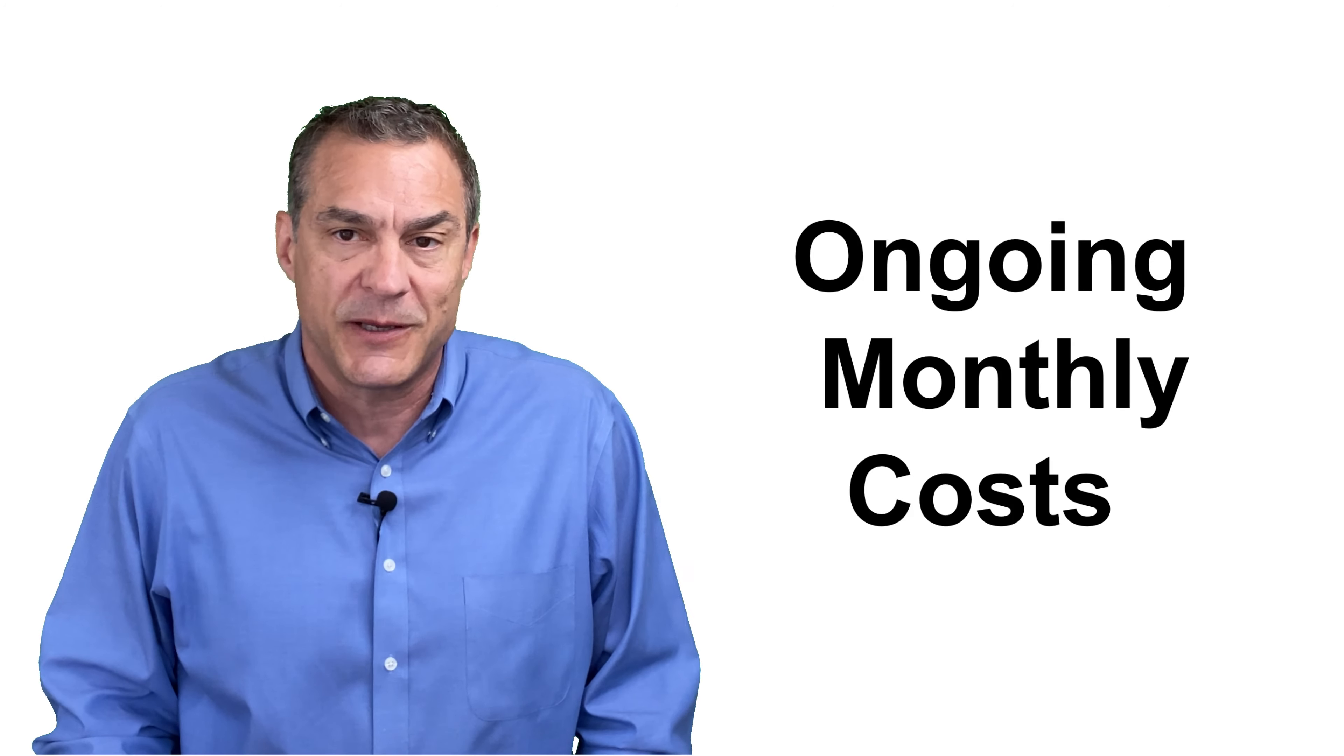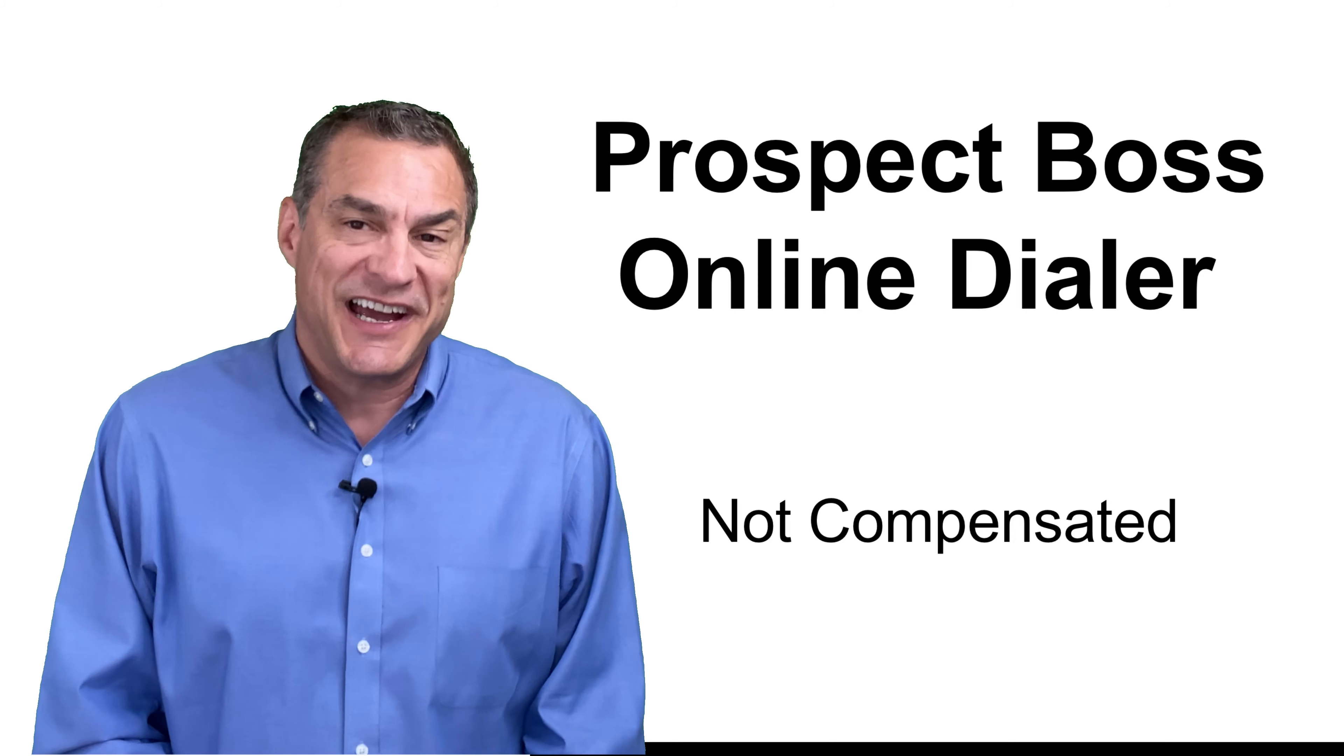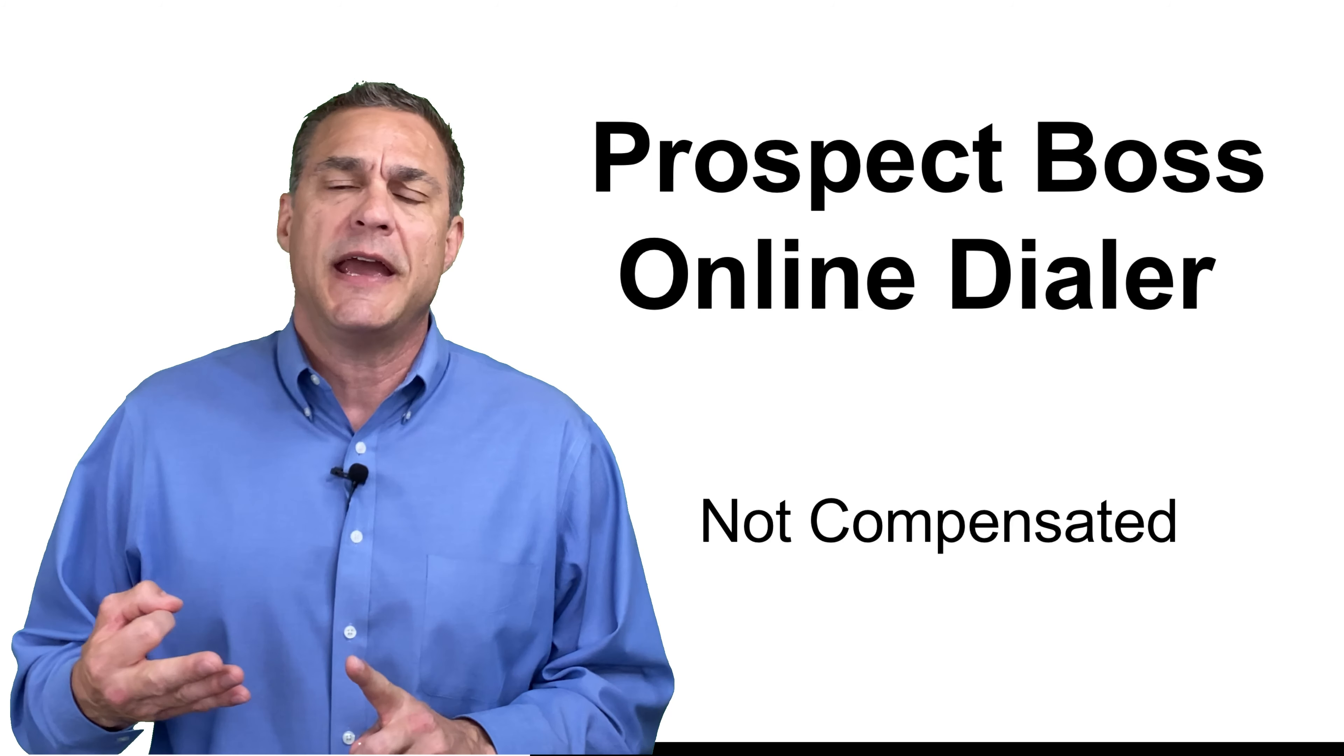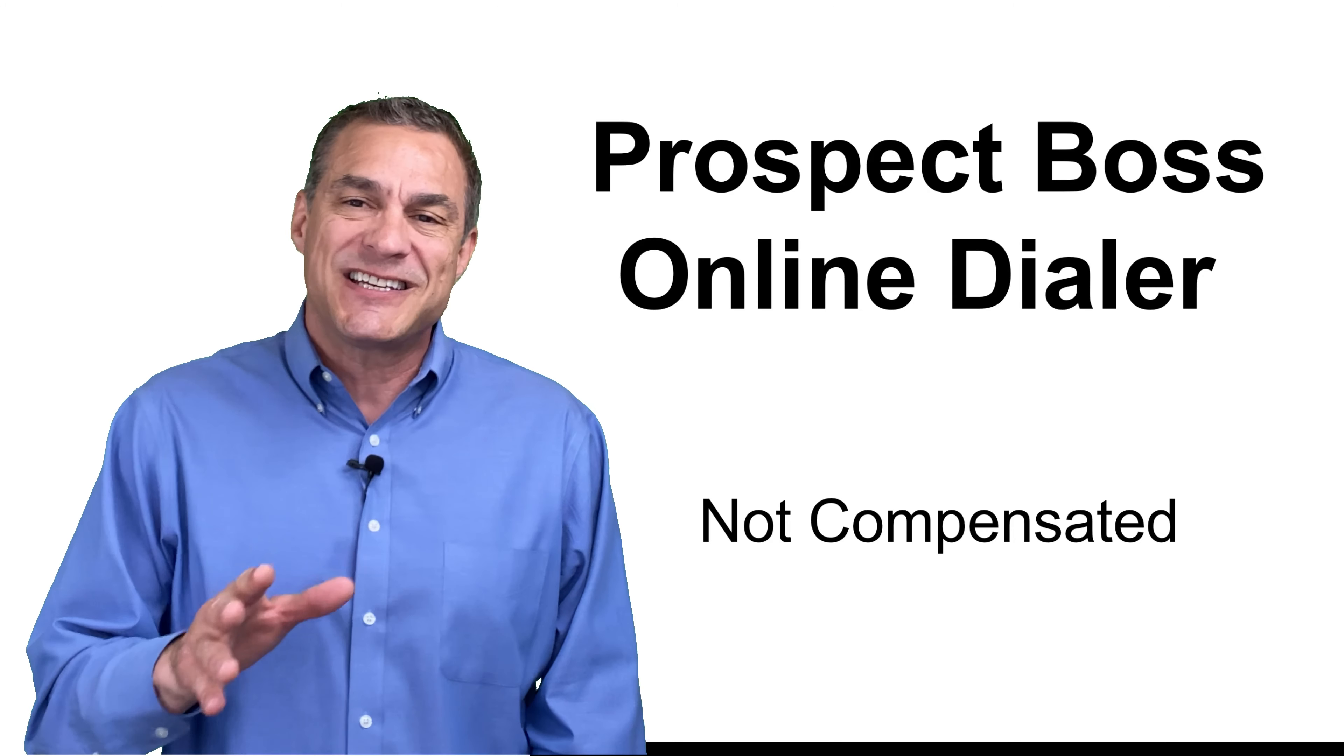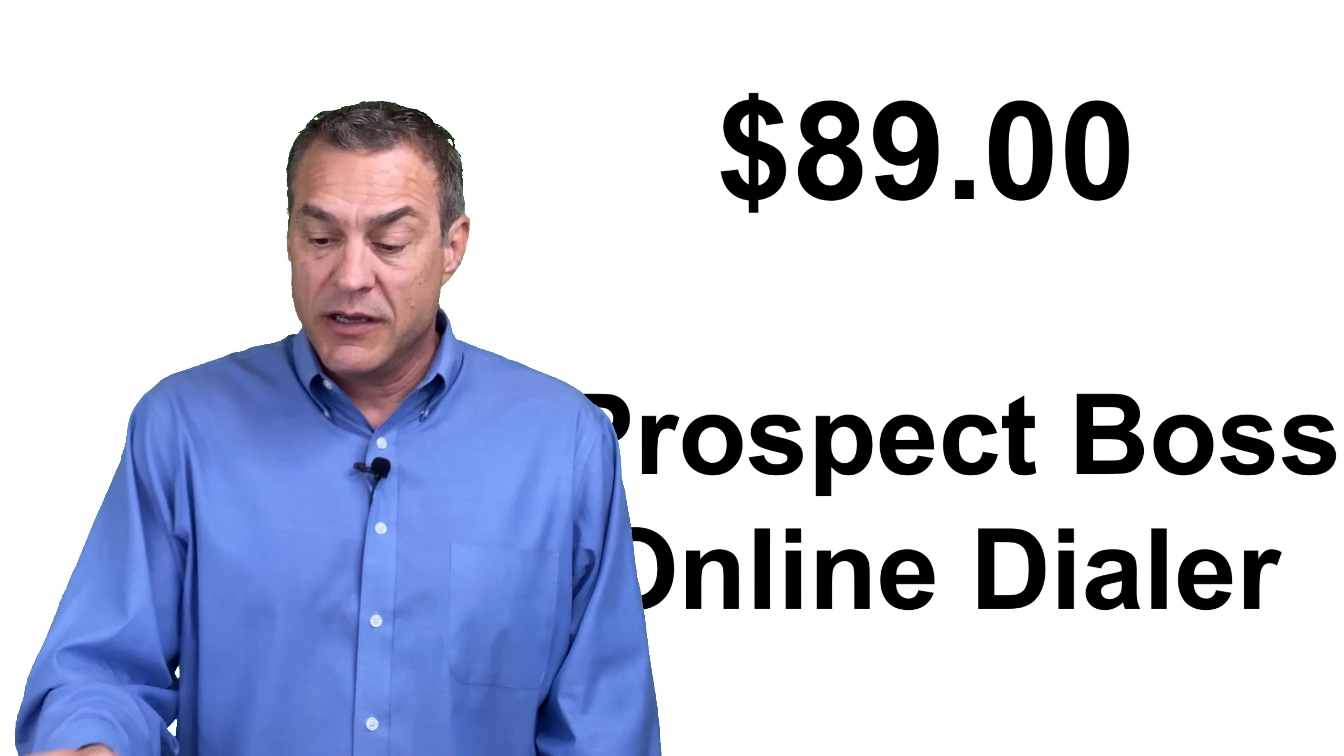But let's talk about the ongoing monthly costs because that's what everybody wants to know. Well, what do I have to pay to keep this going? So first of all, we use Prospect Boss. Prospect Boss is an online dialer. It's a fantastic product, fully functional. You can do live transfers. You can listen to the phone calls. You have all the reporting capabilities of most any other dialer. But it's only $89 per month. That's a special price through our Medicare Millionaire Discount. I've been recommending this for years. I don't get compensated at all for this. It just works. It does everything you'll need a dialer to do.